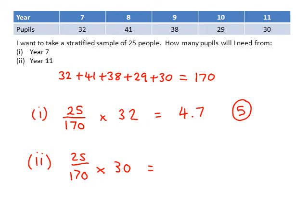Again, don't forget to do 25 divided by 170, then press equals before you times by 30. The answer we get is 4.4, but of course you can't have 4.4 pupils, so we round that number to 4. So 4 is the number of pupils you will need from year 11 for your stratified sample.